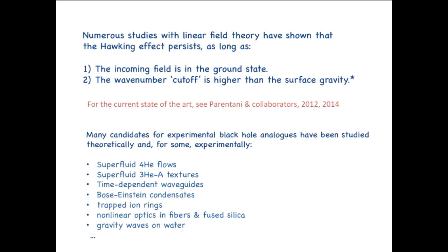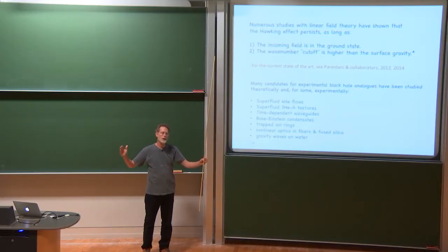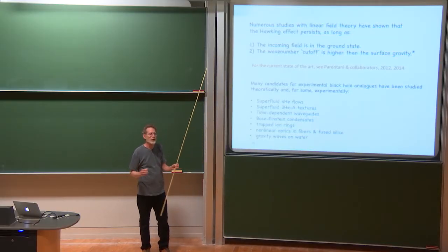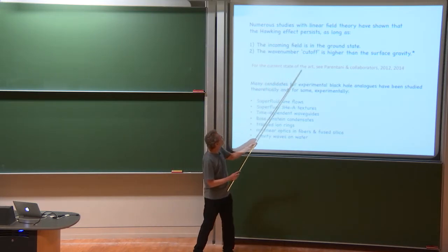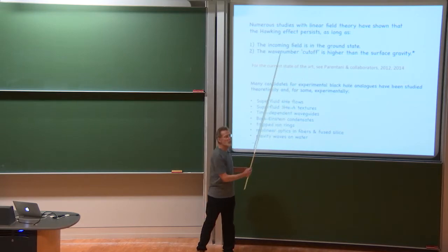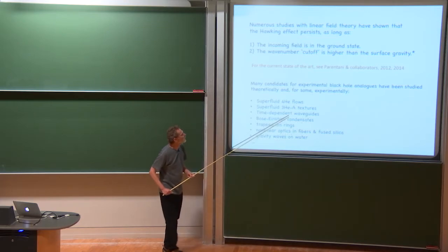Or kind of roughly what this is saying is the wavelength at which that happens should be small compared to the size of the black hole. Actually, it turns out that the Hawking effect is even more robust than that. You can get away with having the cutoff not so much higher or maybe not even at all higher than the surface gravity, provided that the flow has a very long stretch of constant rate of change of the velocity, that is, constant surface gravity. And for the current state-of-the-art on these issues about the robustness, see these recent papers by Parentani and his collaborators.